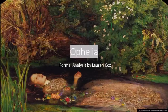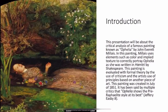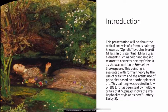This is a formal analysis of Ophelia. This presentation will be about the critical analysis of a famous painting known as Ophelia by John Everett Millais. In this painting, Millais uses elements such as color and implied texture to correctly portray Ophelia as she was written in Hamlet by Shakespeare. This painting is evaluated with formal theory by the use of criticism and the artist's use of principles based on another piece of art.